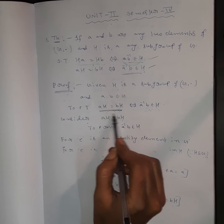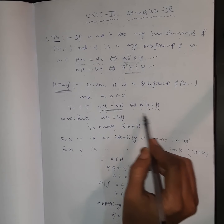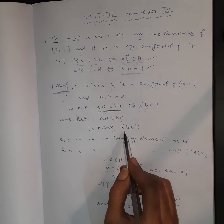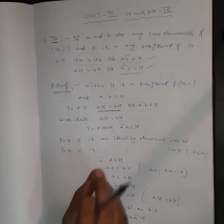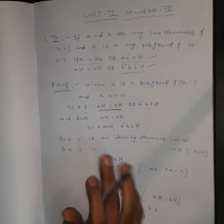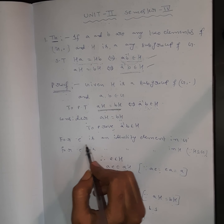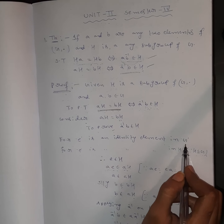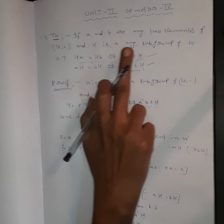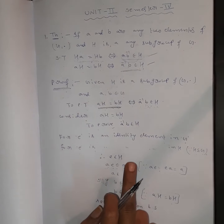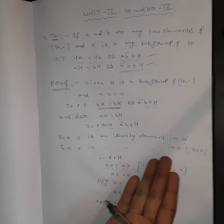Consider AH equals BH. First condition to prove: A⁻¹B belongs to H. Since H is a subgroup of G, the identity element E belongs to H.